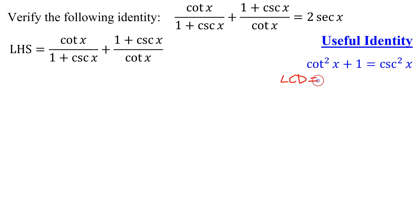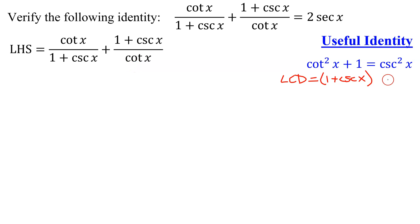To find the LCD, take your first denominator — I definitely need 1 plus the cosecant of x. Then go to your next denominator: do I have a cotangent of x here? No, so I'm going to have to multiply by the cotangent of x. So this is my least common denominator.